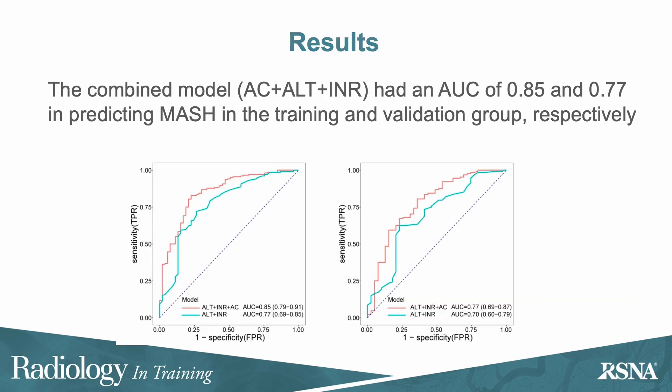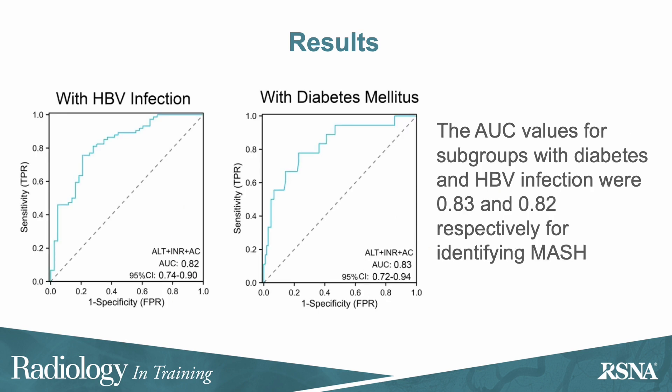The combined model had an AUC of 0.77 in predicting steatohepatitis in the validation group, while the AUC values for subgroups with diabetes and hepatitis B infection were 0.83 and 0.82, respectively.